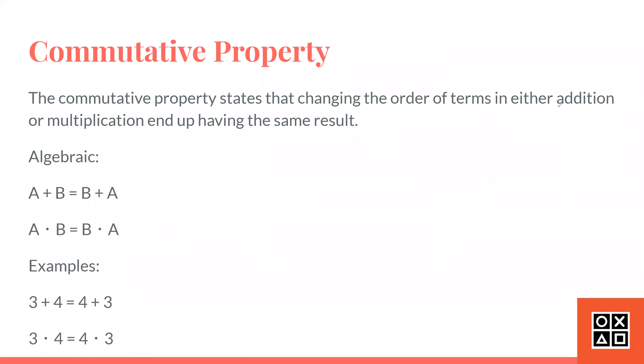Notice that in this sentence, it said addition or multiplication. This means that the commutative property will not work for division and subtraction. So, the commutative property will only work for addition and multiplication.